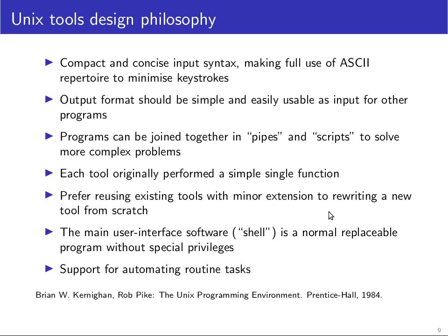The main user interface of Unix — the command line shell — is the program that receives the commands you type, and it is a normal, fully replaceable program without any special privileges. As a result, many people have written their own shells, and competition to add functionality has led many shells to evolve into full-featured programming languages. These shells are used not only as interactive tools for starting, controlling, and querying the status of programs, but also as programming languages to automate routine tasks and interact with other programs.